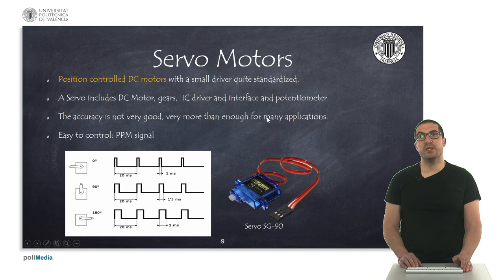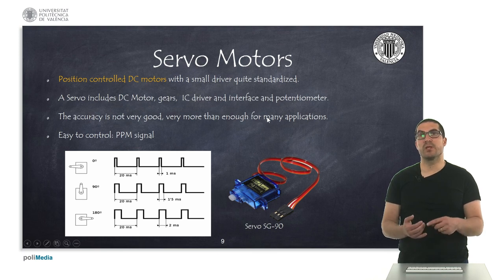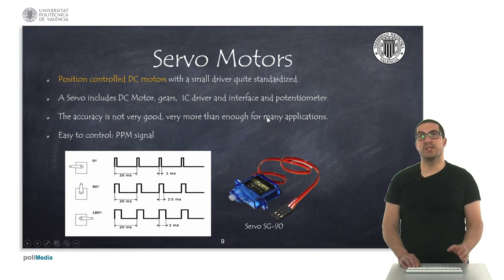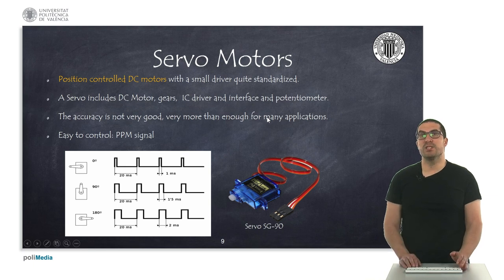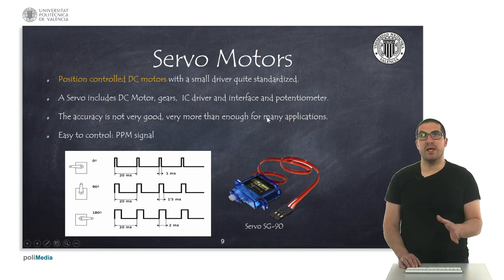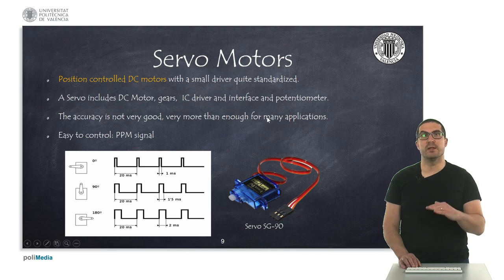We also have servo motors — a specialized kind of DC motor. A servo includes a DC motor but also gears and the necessary electronic interface and a potentiometer. The difference from a DC motor is that the servo provides position control, so we can easily control the position of the motor's axis, and it's quite standardized. The main drawback is that accuracy is not very good in general, but they are cheap and will be more than enough for many applications. They are very easily controlled with a PPM signal — a periodic signal in which we modulate the width of a specific on-period to control the position of the servo.